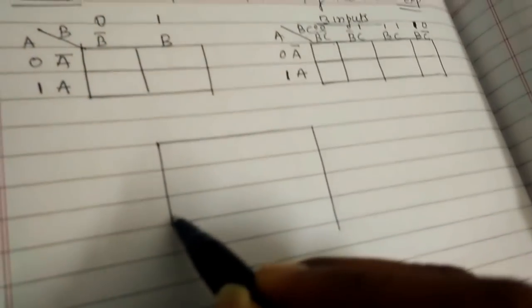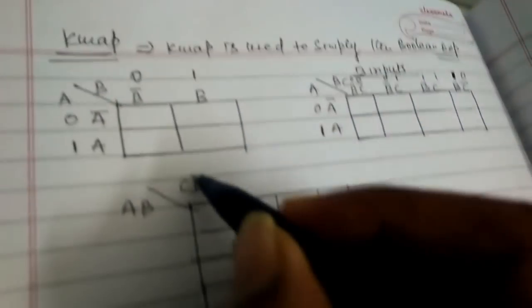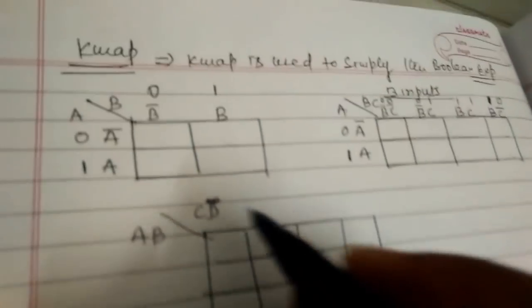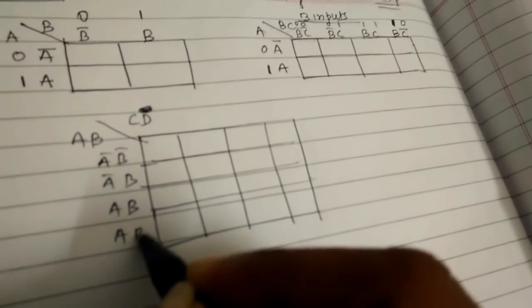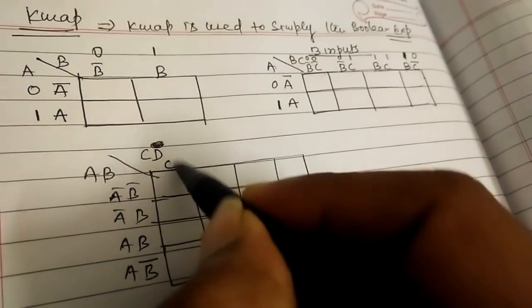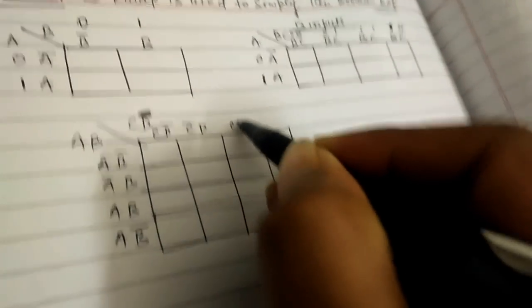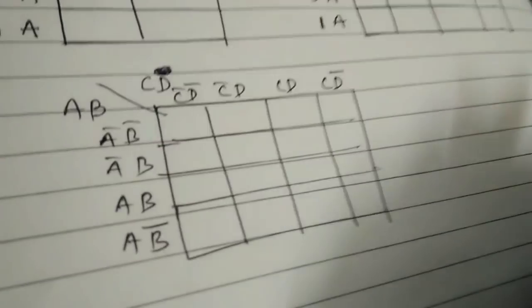For four inputs, you design a four-by-four matrix. A and B are the horizontal inputs, and C and D are the other two inputs. The row headers follow the same format: A bar B bar, A bar B, AB, and AB complement. Similarly, the columns are: C bar D bar, C bar D, CD, and CD complement.